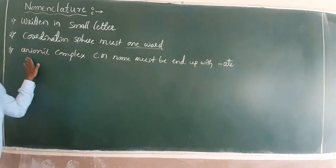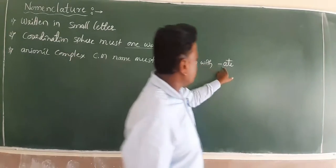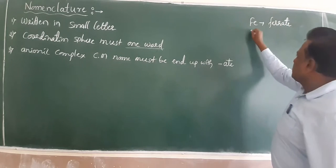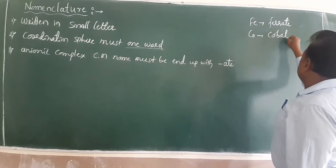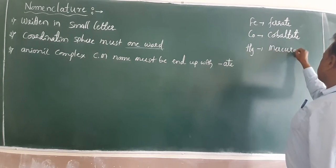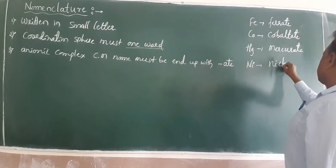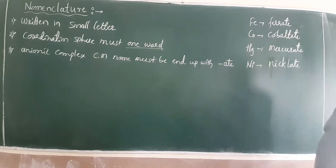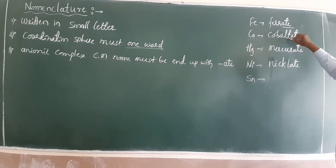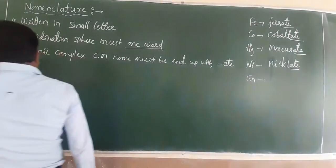To repeat: find out the type of complex — cationic, anionic, or neutral. If the complex is anionic, the central metal name ends with -ate. For example: iron becomes ferrate, cobalt becomes cobaltate, mercury becomes mercurate, nickel becomes nickelate, and tin becomes stannate.